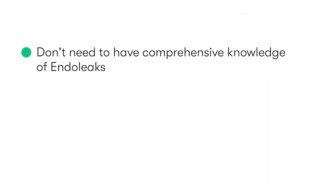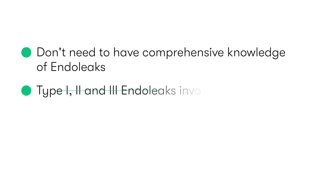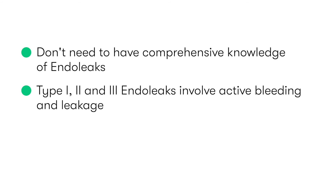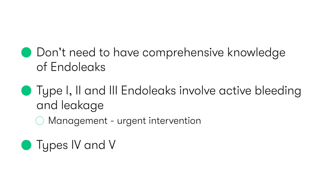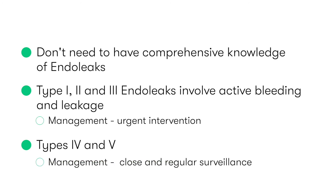Whilst there's a lot of information to take in, as a medical student you don't need to recall all the various elements, but it's important to be aware that type 1, type 2, and type 3 endoleaks involve active bleeding and leakage, and as a result carry a significant risk of rupture and potentially lethal complications. So whilst types 4 and 5 may be managed with close and regular surveillance, types 1, 2, and 3 endoleaks require urgent intervention to prevent patient deterioration.